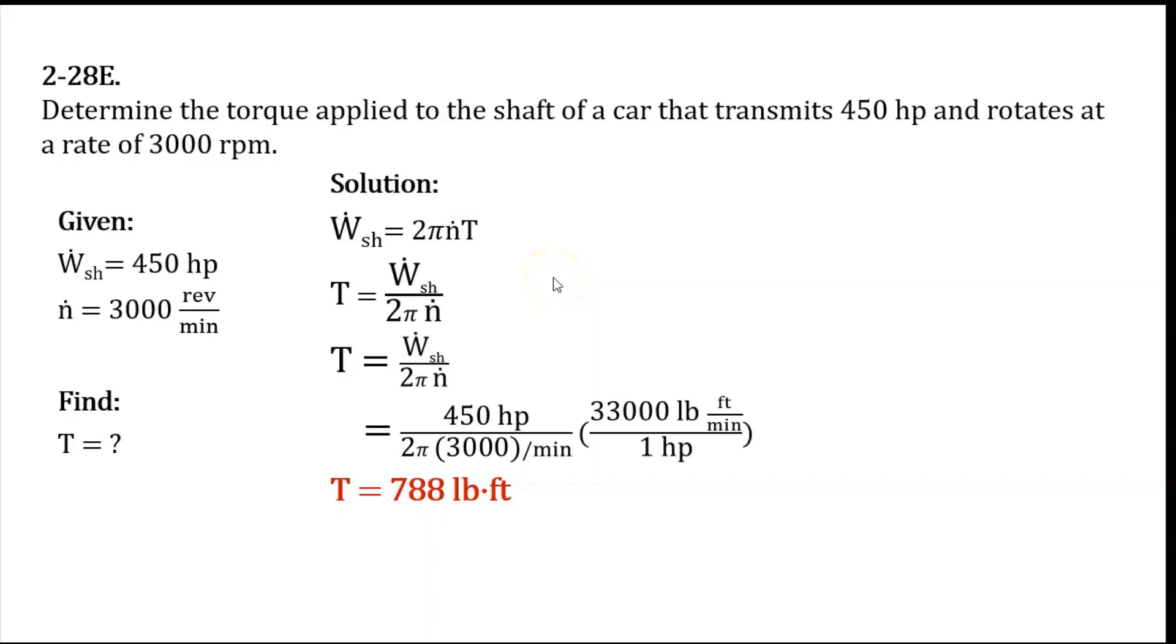We can solve the torque transmitted through the shaft using the equation of the power transmitted through the shaft, which is W dot equals 2 pi n dot multiplied by T, where n dot is the number of revolutions per unit time and T is the torque.